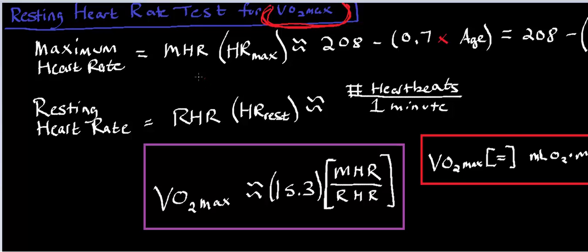There are two things we have to do here: we have to calculate the maximum heart rate — and the formula we're going to use is more or less an estimation — and then we have to determine the resting heart rate, which is something you can actually measure. You can measure the number of times their heart beats per minute, or per 15 seconds and multiply by 4. We're going to do each of these calculations and then calculate the VO2 max.